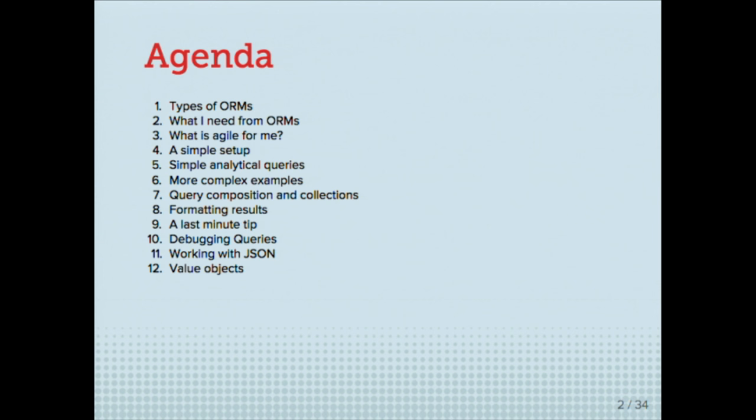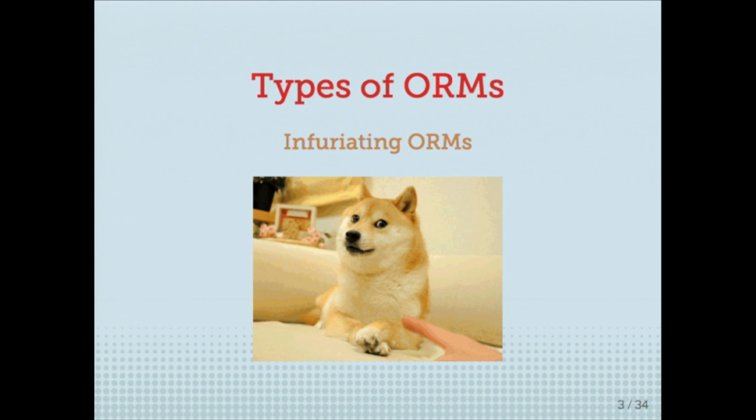Let's start with the types of ORMs. The first type is the infuriating ORM — the one that rubbed me the wrong way. At the beginning I start coding, everything is nice, and then it's like: what is going on, why is this not working? I think you have had that sensation with some types of ORMs or any library that you've ever used.